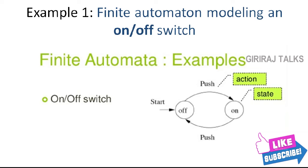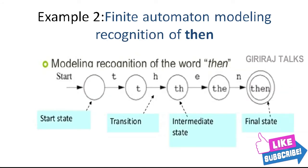It is often necessary to indicate one or more states as FINAL or ACCEPTING states. Entering one of these states after a sequence of inputs indicates that the input sequence is good in some way. For instance, we could have regarded the state ON as ACCEPTING because in that state, the device being controlled by the switch will operate. It is conventional to designate ACCEPTING states by a double circle, although we have not made any such designation in the diagram.